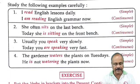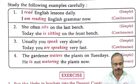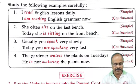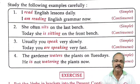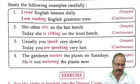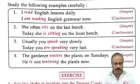'I am reading English grammar now' — continuous. 'She often sits on the last bench' — simple. 'Today, she is sitting on the front bench' — continuous. 'Usually, you speak very slowly' — simple. 'Today, you are speaking very fast' — continuous.